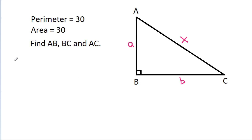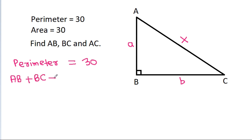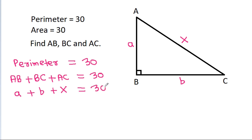The perimeter is equal to 30, and perimeter equals AB plus BC plus AC, that is 30. So A plus B plus X is equal to 30, which gives us A plus B equal to 30 minus X.